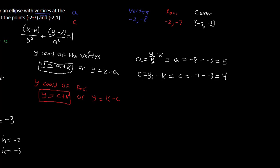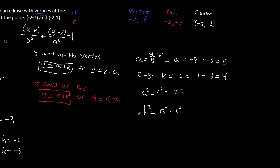Now we have c and a, but we need a² and b². a² is simply 5² = 25. For b², we use the formula b² = a² − c² = 25 − 4² = 25 − 16 = 9. So b² = 9.